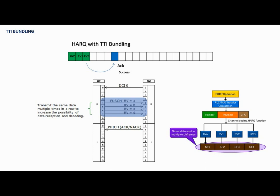In this figure I'm trying to explain this in a graphical way. Some people say this is a waste of resources — so why do we require this? The answer is that this method increases the possibility of data reception. One might ask: we already have the HARQ technique, and if the destination fails to receive a packet, retransmission via ACK/NAK or DTX can be done, guaranteeing data delivery.